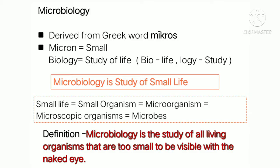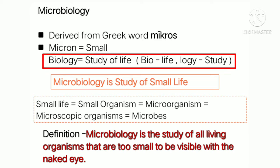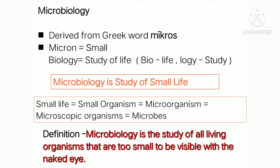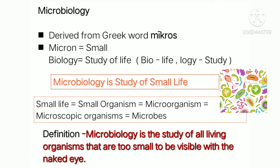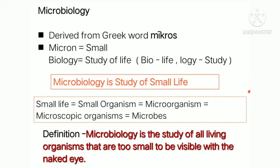The word microbiology is derived from the Greek word 'mikros'. To understand the meaning, let's divide it into two parts: 'micro' meaning small or tiny, and 'biology' meaning study of life. Together, microbiology means the study of small life — tiny organisms present in nature, also known as microorganisms, microscopic organisms, microbes, or germs.